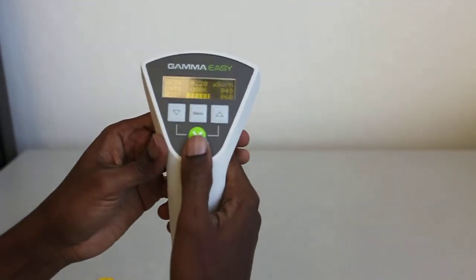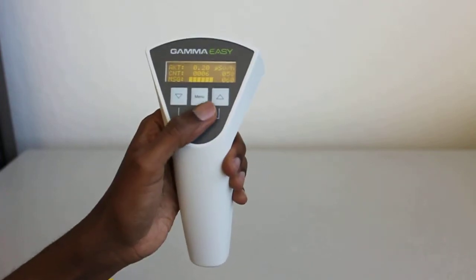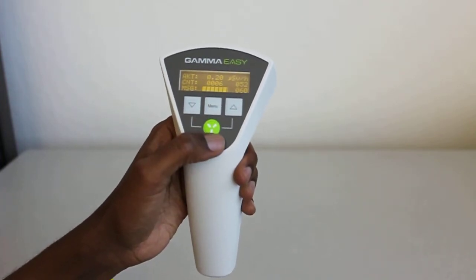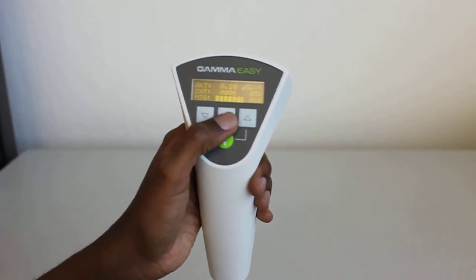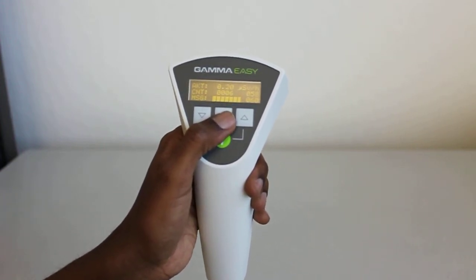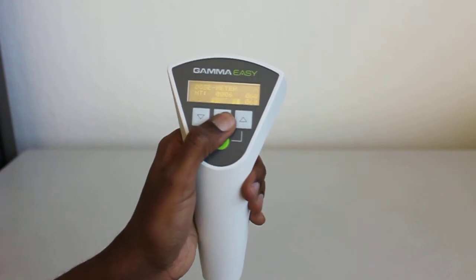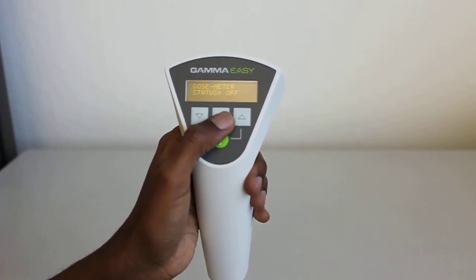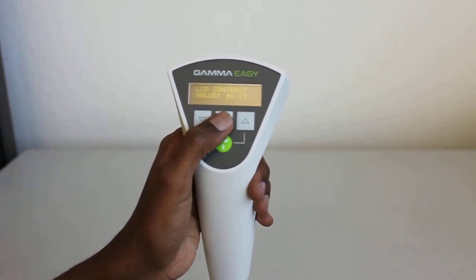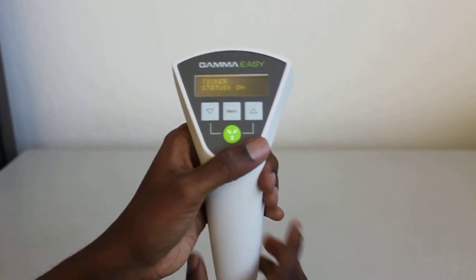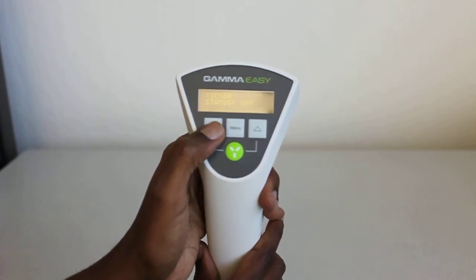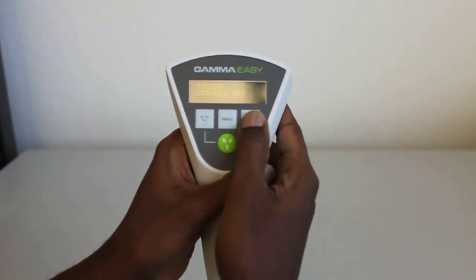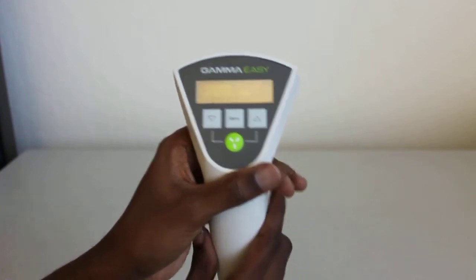So in the Gamma Easy, one thing you might want to do if you're bringing it up against suspect radioactive sources, you might want to turn the alert ticker on just so that you have an audible way to hear the radiation source. Ticker status is already on. You can switch that off by holding down the left navigation key and on by hitting the right one.